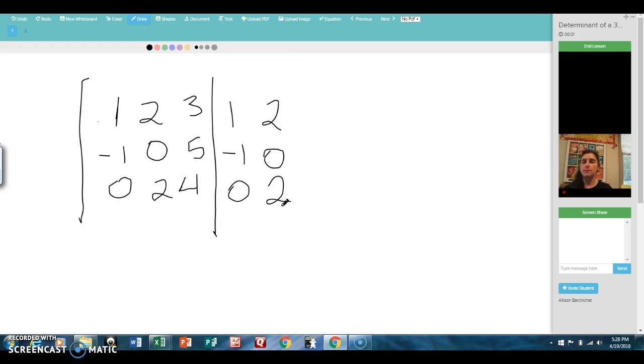All right, so there's our augmented matrix. And now what we're going to do is multiply the diagonals just like we do when we have a 2x2 determinant.